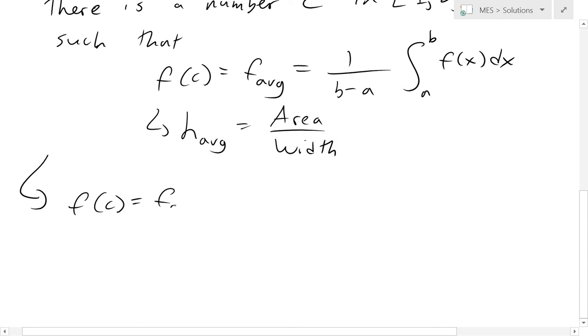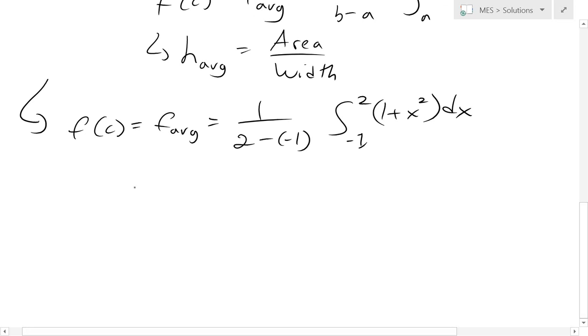So for this specific case, we have f(c) = f_avg = 1 over (2 - (-1)), and now integral from -1 to 2 of 1 + x² dx. So now if we take the integral of this and simplify, that's going to be 1 over 3. Now the integral is going to be x + x³/3 from -1 to 2.